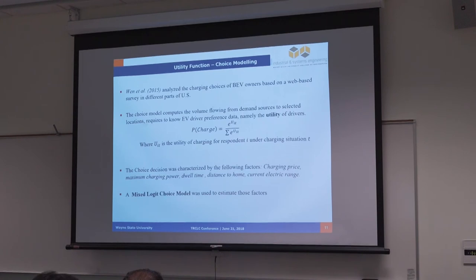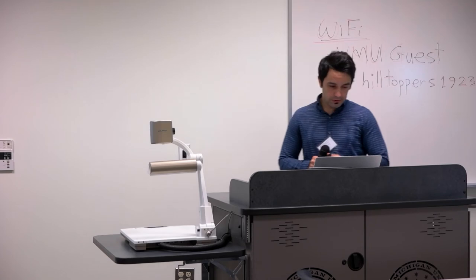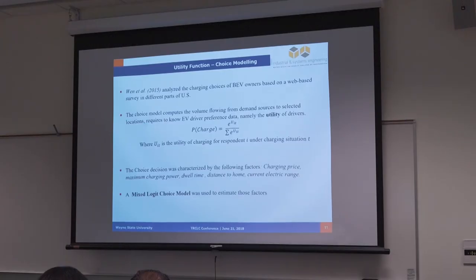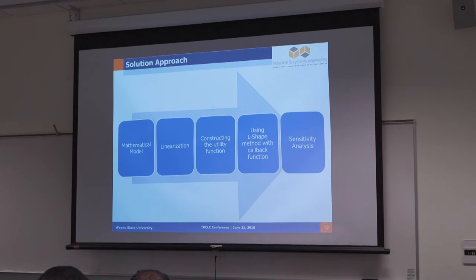For estimating the utility function variables, we used a study done by Wynn et al., 2015, which was reported to TRB Research Center. We used their data to estimate our variables in the utility function. Some of the choice decisions we used are charging price, maximum charging buffer, dwell time, distance to home, electric charging range. They are estimated by mixed logit model.